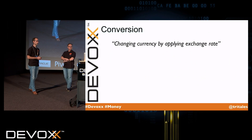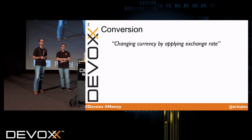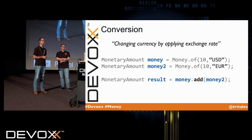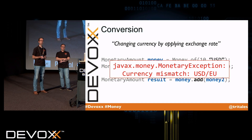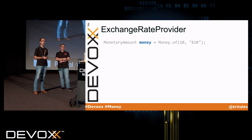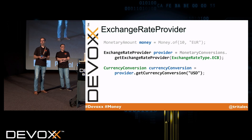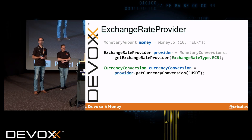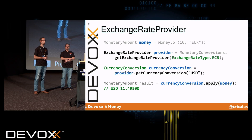Let's talk about conversion. Conversion is changing the currency by applying an exchange rate, where the exchange rate is the ratio between two currencies. As an example, let's create two monetary amounts with different currencies and try to add them. This is not going to succeed — a MonetaryException is raised because the currencies don't match. So we have to convert the currencies first. Conversion can be applied using an exchange rate provided by an exchange rate provider, as in this example from the Moneta reference implementation. The exchange rates are retrieved from the European Central Bank and used to convert the monetary amount from euros into dollars. It's also possible to retrieve exchange rates from the International Monetary Fund, or to retrieve historic exchange rates.